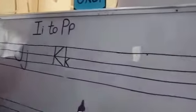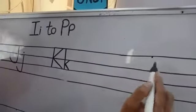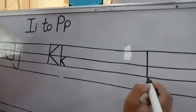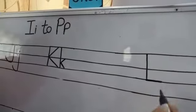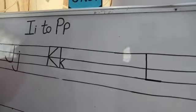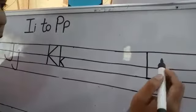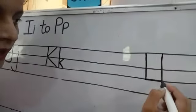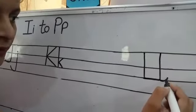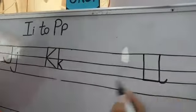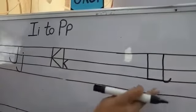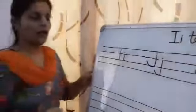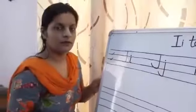K — kite. Now L — lion. For capital L, draw a standing line and a slipping line on the third line. For small letter L, draw a standing line like this. This is L — lion. Next is M — monkey.